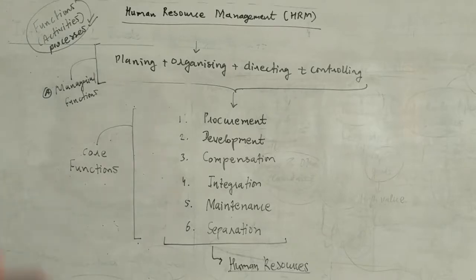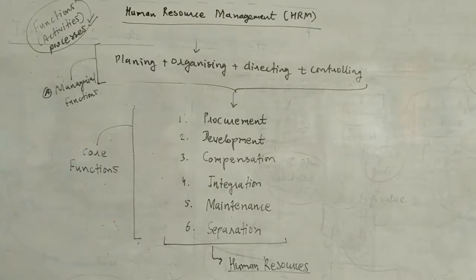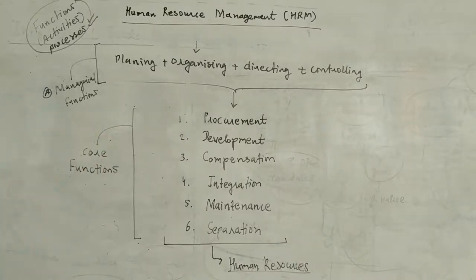The core functions of HRM are: first, procurement; second, development; third, compensation; fourth, integration; fifth, maintenance; and sixth, separation. Procurement means how to get — as an HR manager, your duty is to procure human resources, talent, and skilled people into your organization and fill the positions and posts which are vacant.